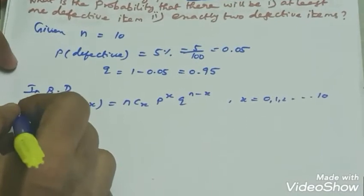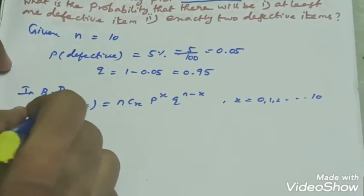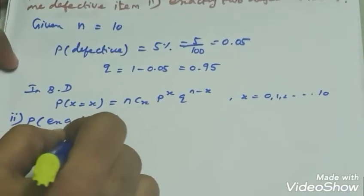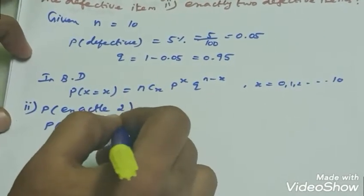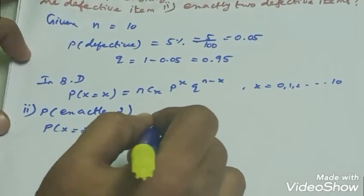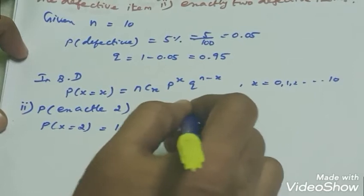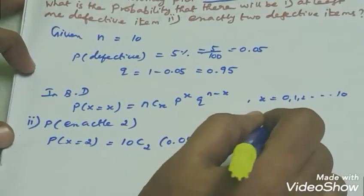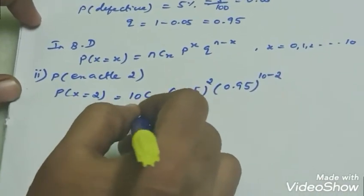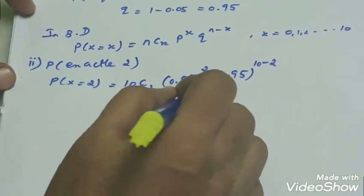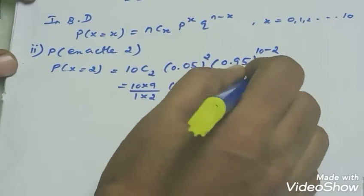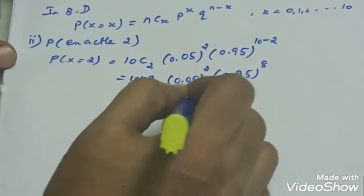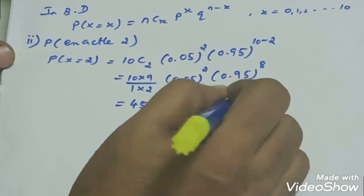Now, for the second subdivision: probability of exactly 2 defective items. P(X=2): applying the formula, n=10, so 10C2 * (0.05)^2 * (0.95)^(10-2). 10C2 is 10 into 9 divided by 1 into 2, which is 45. So 45 * (0.05)^2 * (0.95)^8.